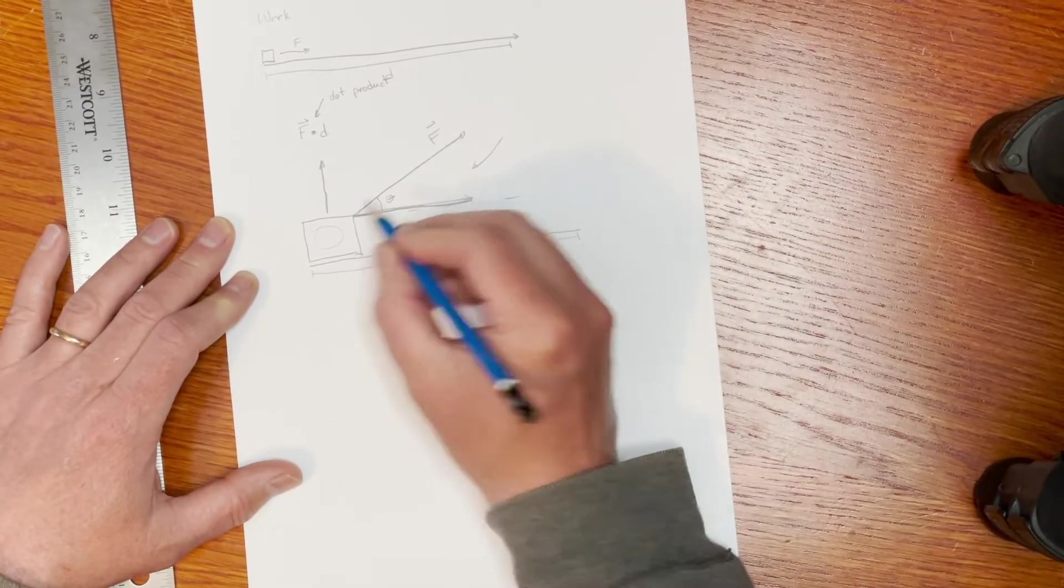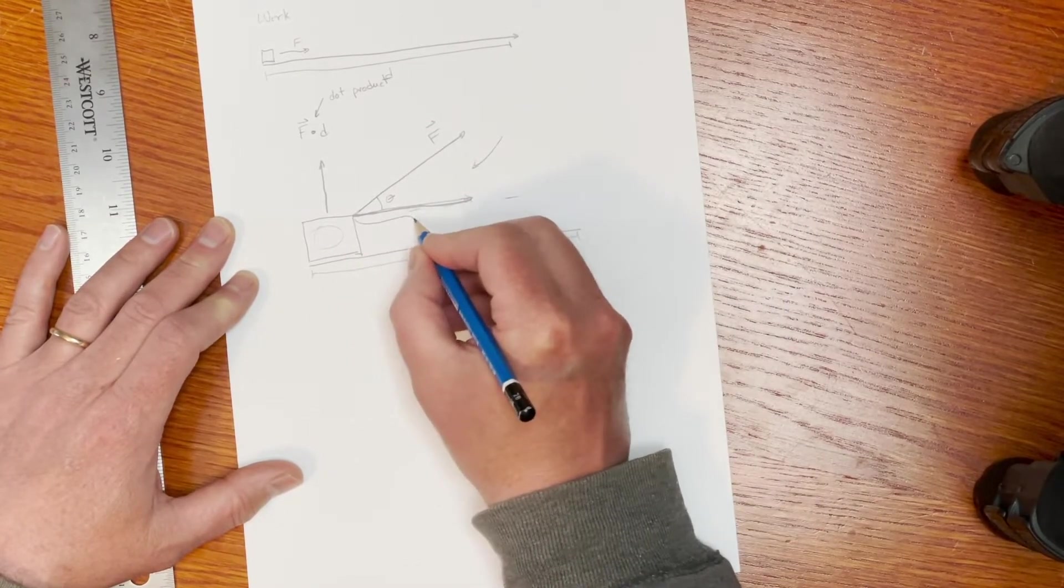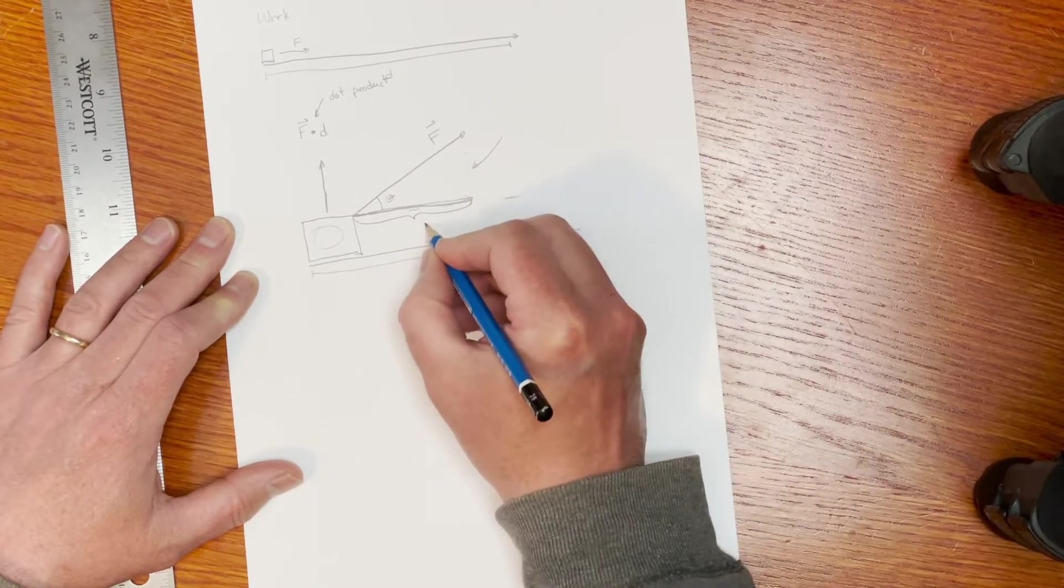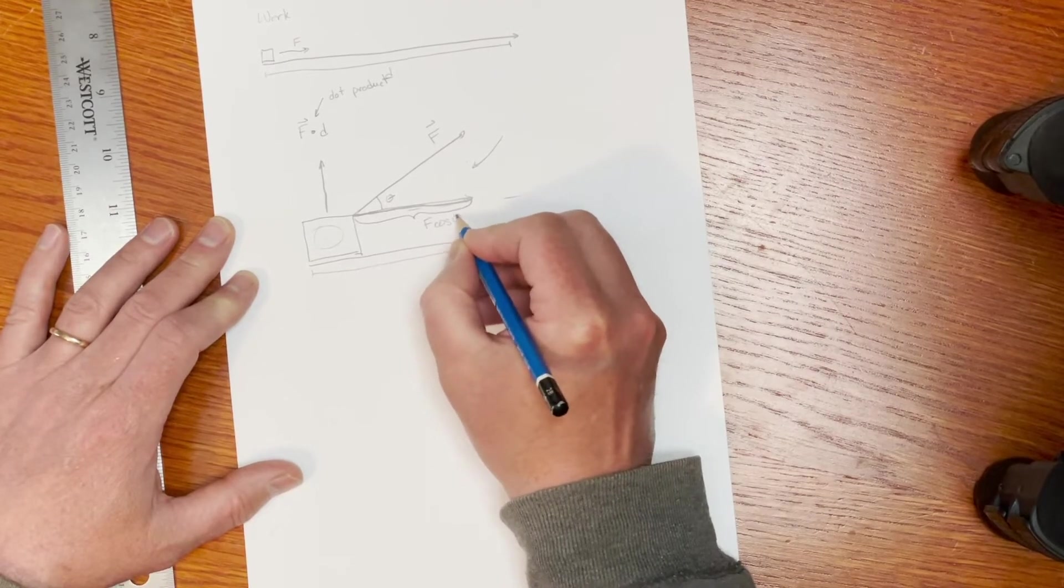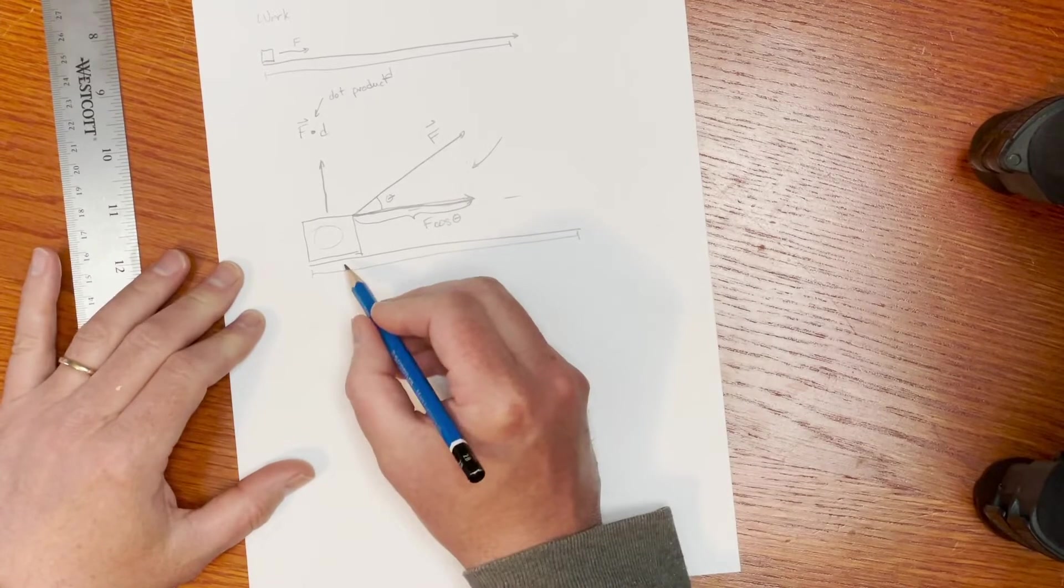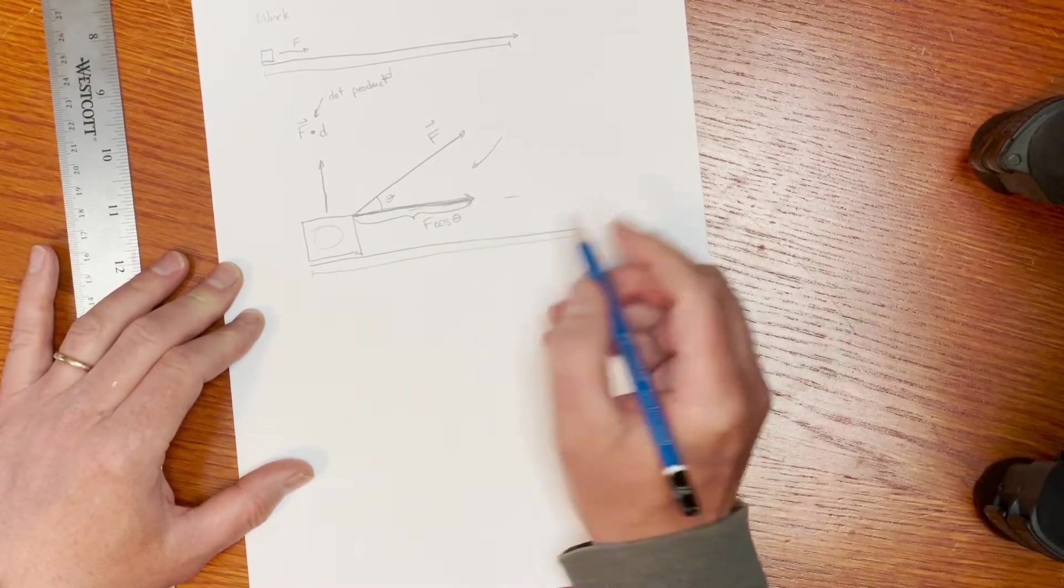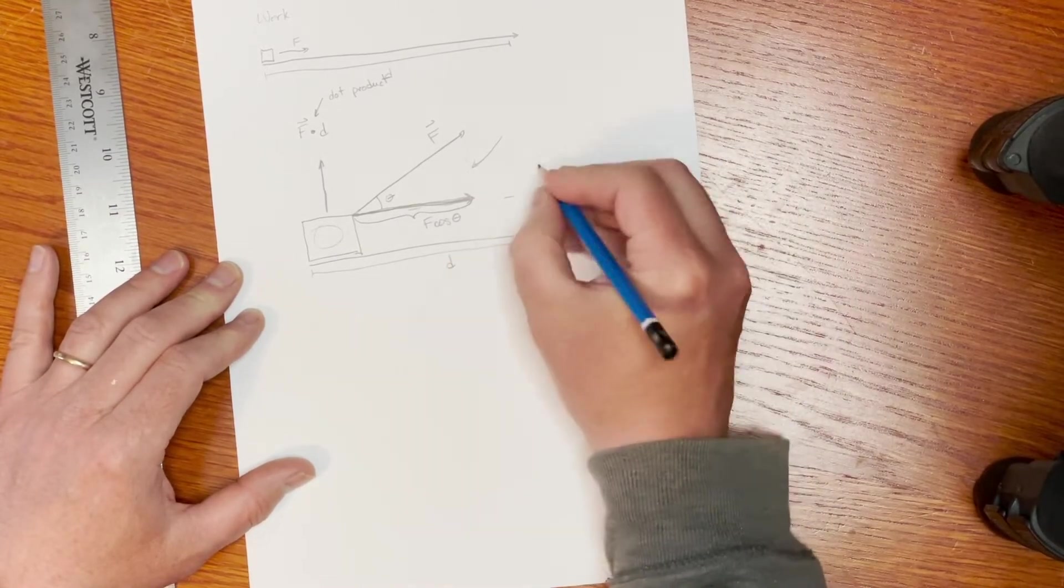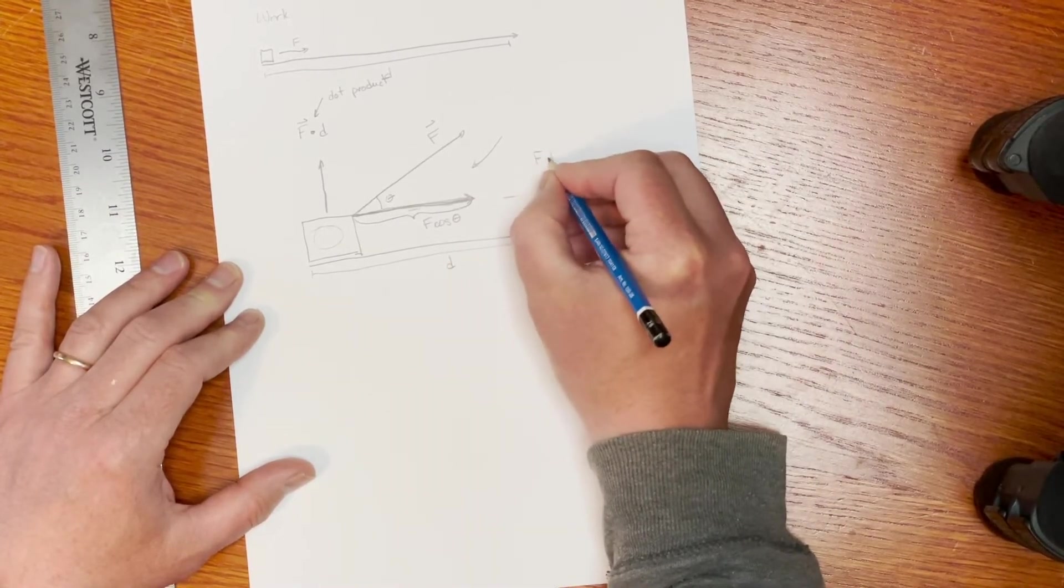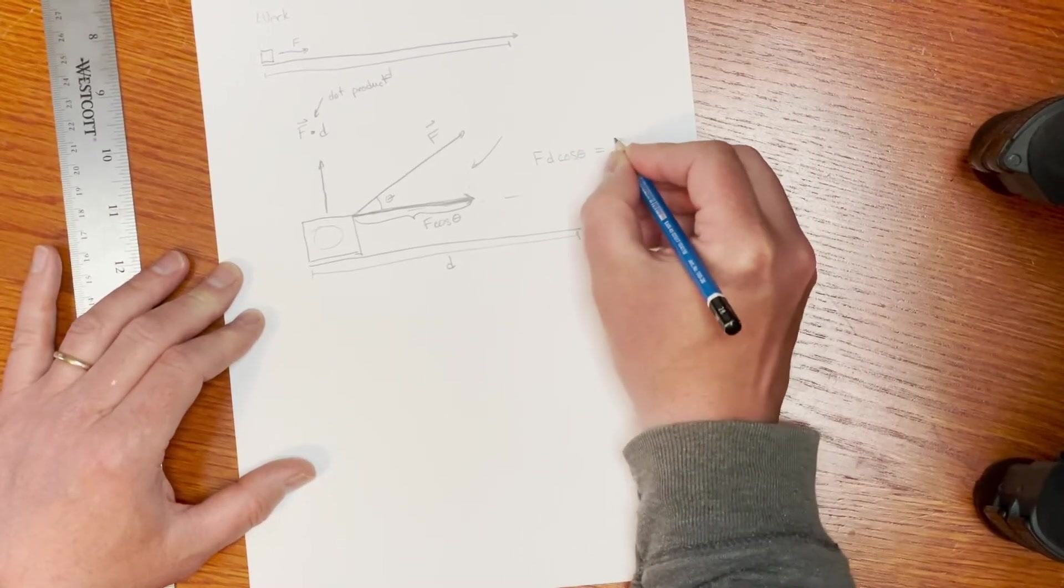And so if you look at the trigonometry there, this component down here is just F cosine theta. And so then if I apply my principle of work that I'm applying this force in the horizontal distance, which is the direction of motion, and this is my distance D, then I just get F D cosine theta. And that's the dot product between those two vectors.